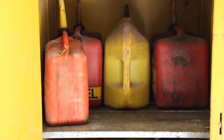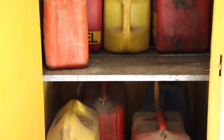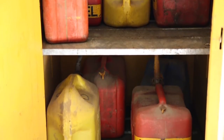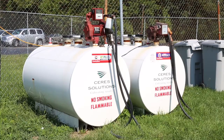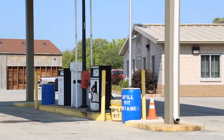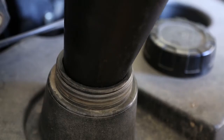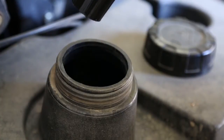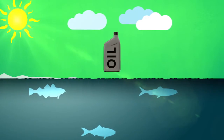Properly dispose of all unused and unwanted household hazardous waste that is considered toxic, flammable, corrosive, and reactive. Such examples are pesticides, herbicides, fertilizers, antifreeze, and propane tanks. Recycle used oil and antifreeze by taking them to service stations and other recycling centers. Never put oil or other chemicals down storm drains or in drainage ditches. One quart of oil can contaminate up to 2 million gallons of drinking water.